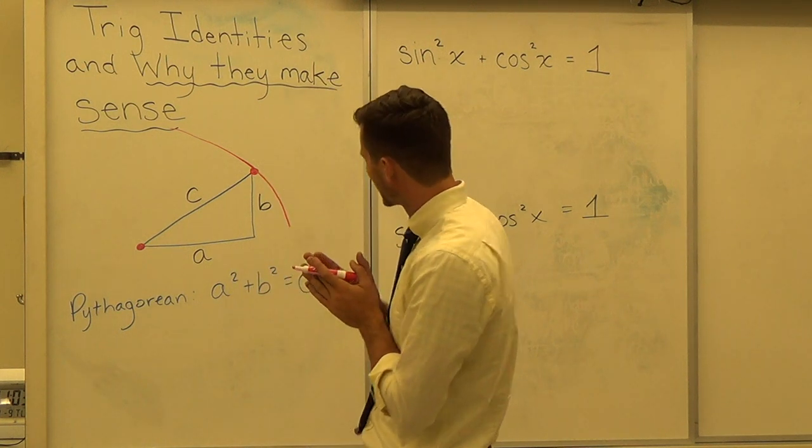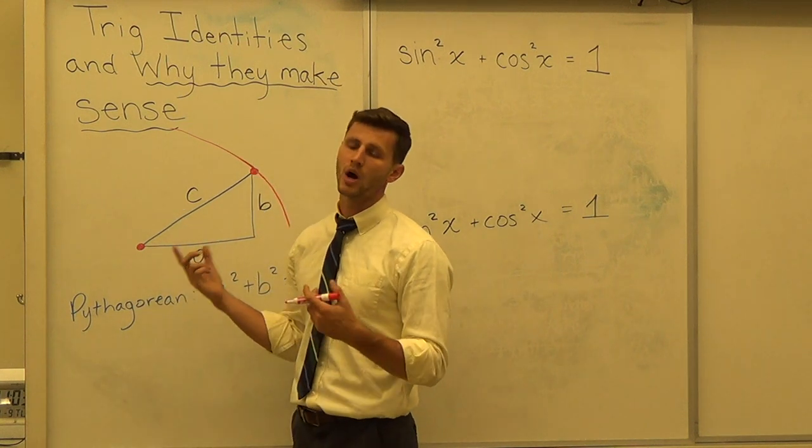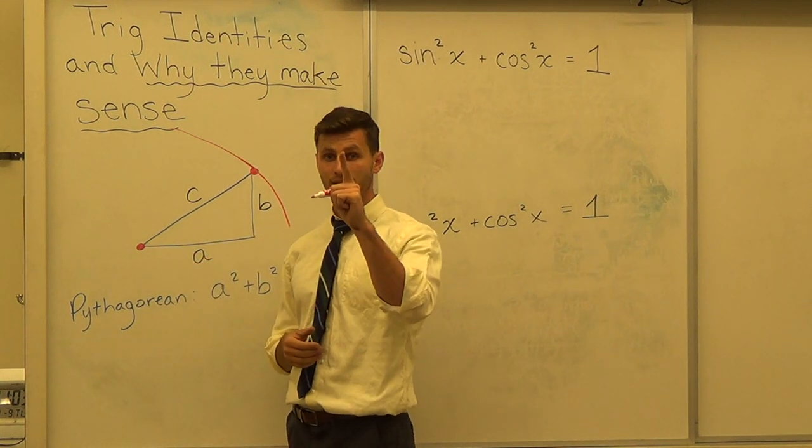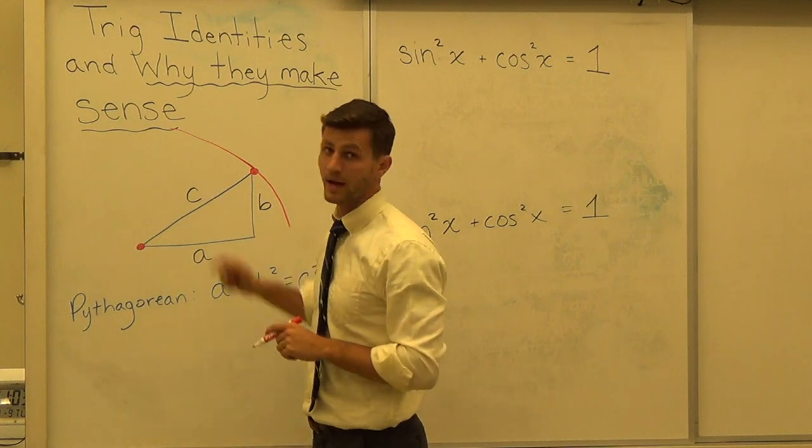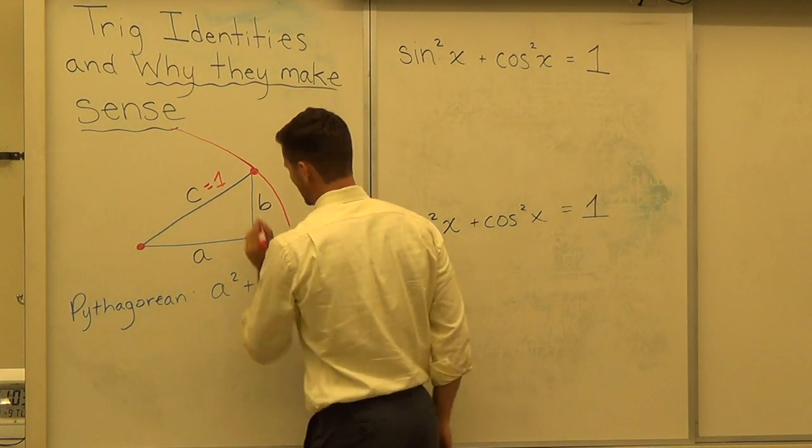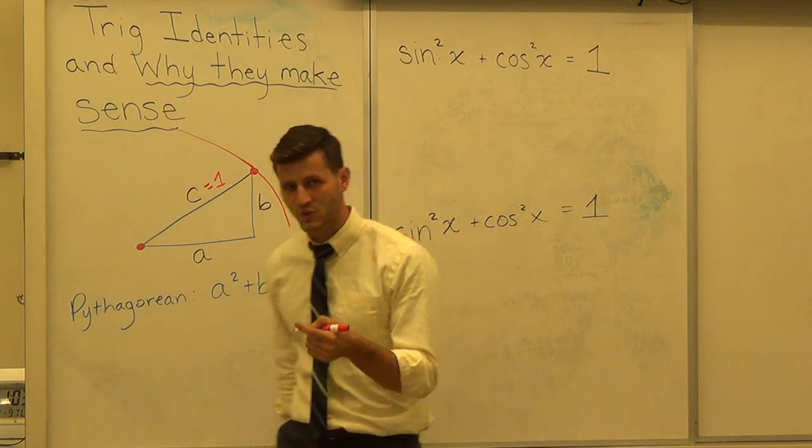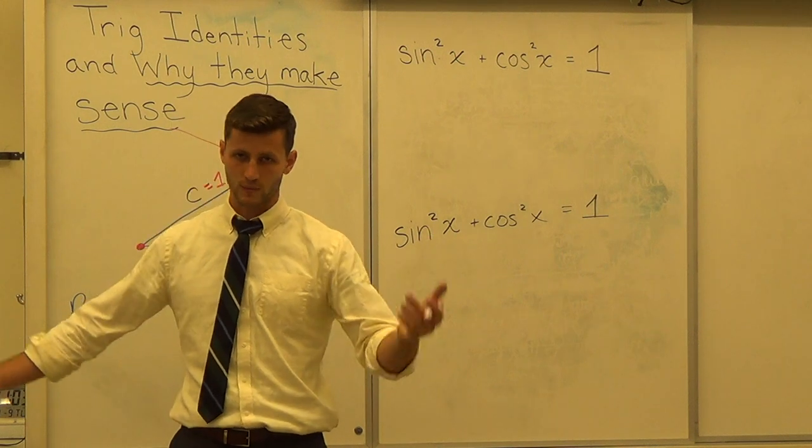Now when we look at this we remember from the first video that C, the hypotenuse, is always equal to one. It's the unit circle because the hypotenuse equals one. So C equals one. So underneath C squared I'm going to write one. And I can write one squared but one squared is one.